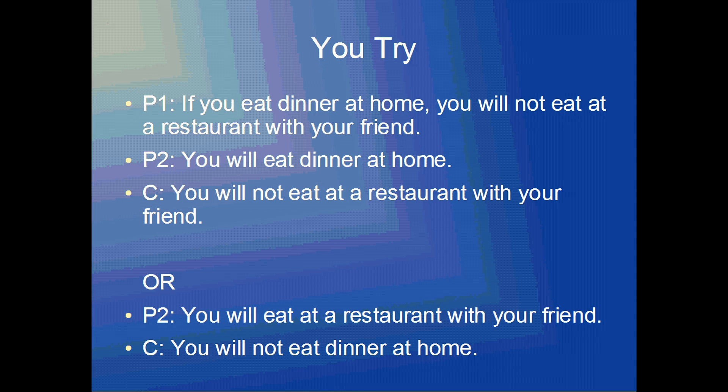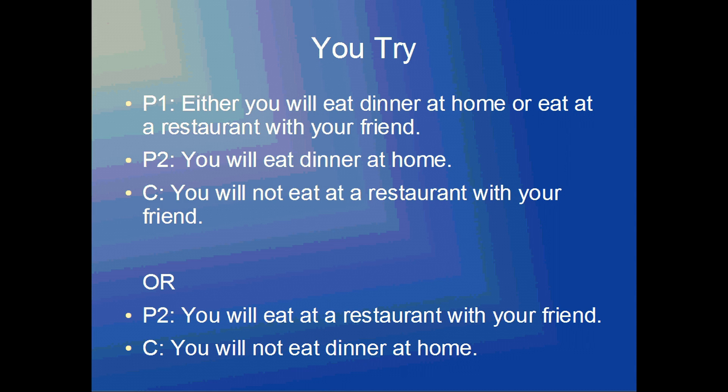Lastly, if we convert the conjunctive syllogism to a disjunctive syllogism, I want to emphasize for a third time that we're making the assumption that one possibility will be confirmed but the other must be denied. In premise one: either you will eat dinner at home or eat at a restaurant with your friend. We confirm in the second premise that you will eat dinner at home, which means in the conclusion you will not eat at a restaurant with your friend. And if we change the second premise so that you will eat at a restaurant with your friend, then in the conclusion you will not eat dinner at home.